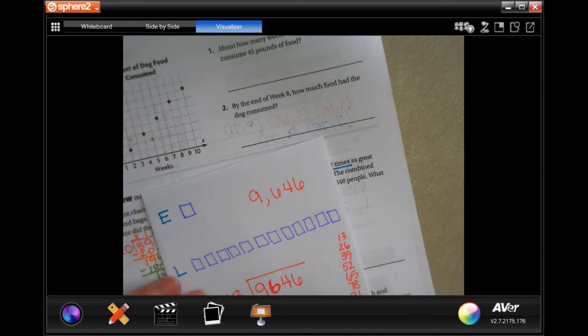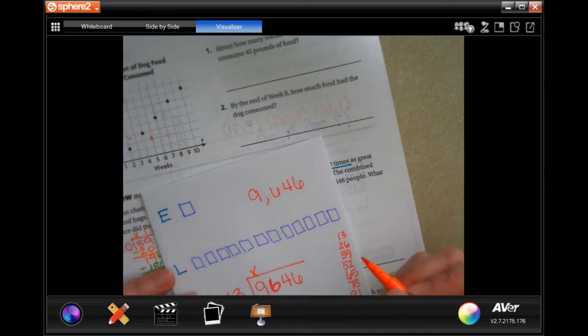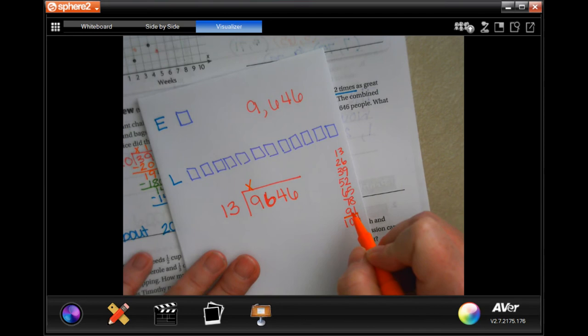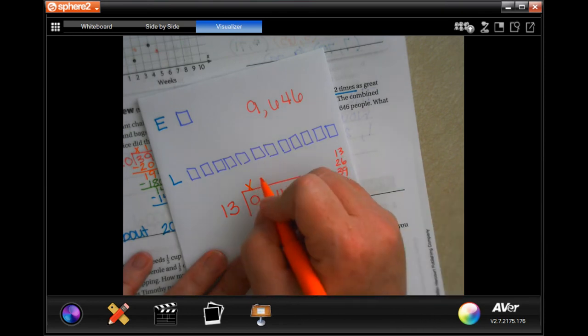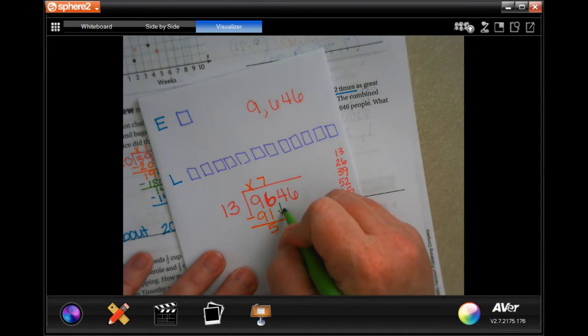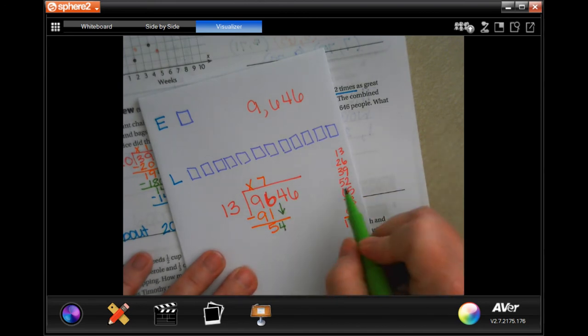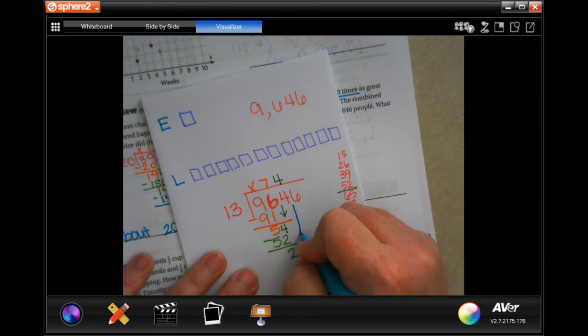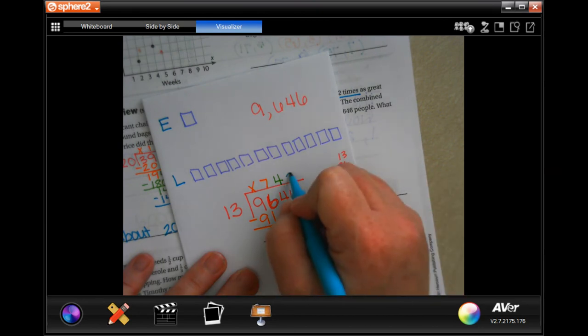All right, so thirteen is not going to go into nine, placeholder. Thirteen into 96, the closest we're going to get is 91, and that's seven times. That was 91. Subtract, we're going to get five. Five is definitely smaller than thirteen, so we can bring down our four. The closest we're going to get to 54 is 52, which is four times. Four times thirteen is 52. Subtract and we're going to get two.